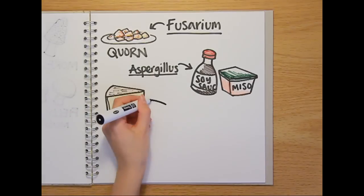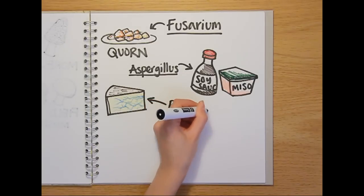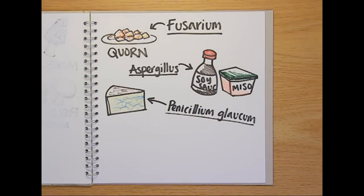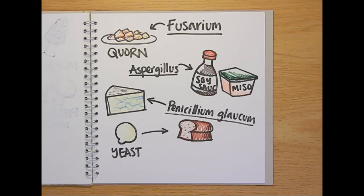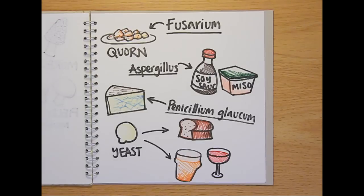Cheese lovers' lives wouldn't be the same without molds in the Penicillium genus, like P. glaucum, to make the blue veins and pungent odors of blue cheeses. And of course, we use yeast to turn grains and water into bread, and grains, fruit or even potatoes into alcohol.